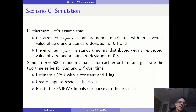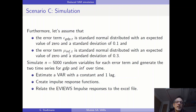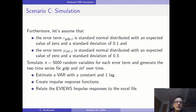On top of the assumptions made before with respect to the coefficients, we are assuming that the error term epsilon in the GDP equation is standard normally distributed with an expected value of zero and a standard deviation of 0.1. The error term mu in the inflation equation is also standard normally distributed with an expected value of zero and a standard deviation of 0.3. We should simulate n=5000 random variables for each error term and generate the two time series for GDP and inflation over time.